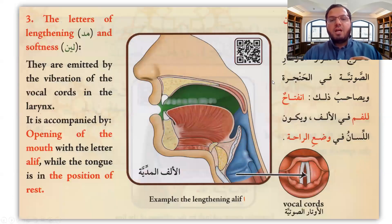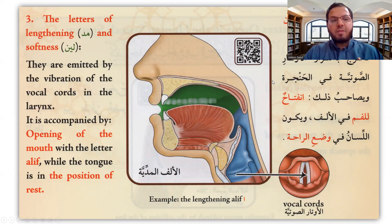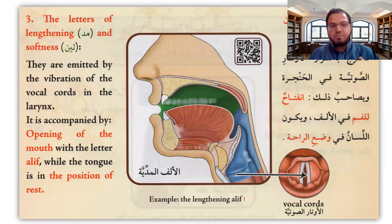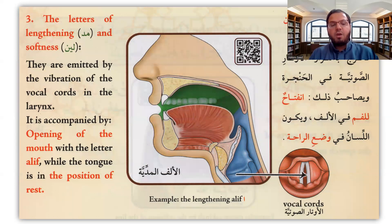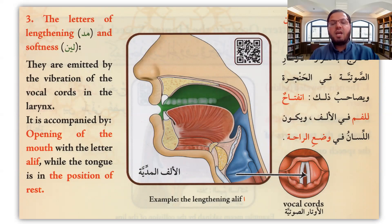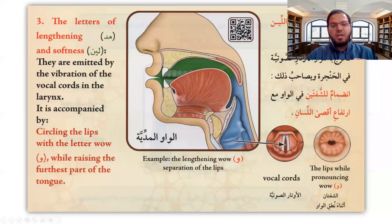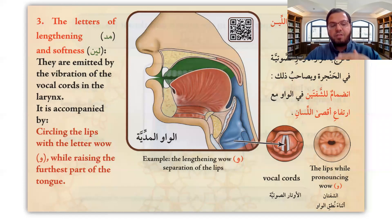If you would like to know the letters of mad and lean — alif, the lengthened mad, and the softness — they are emitted by the vibration of the vocal cords. With the letter alif, we open the mouth while the tongue is in the resting position. With waw, we do the same but circulate the lips while raising the back part of the tongue.